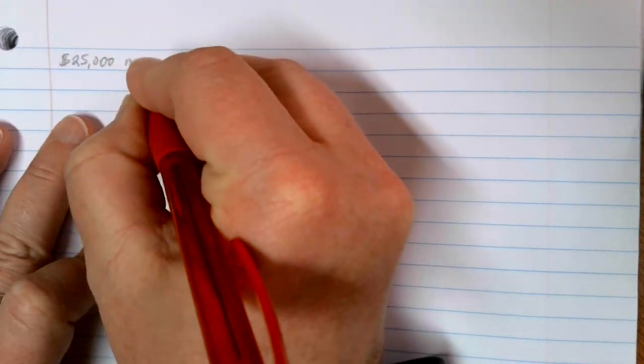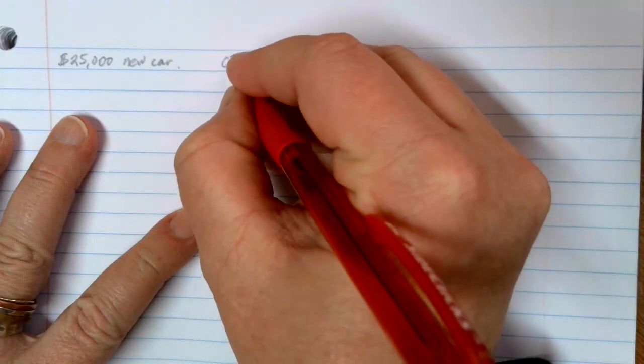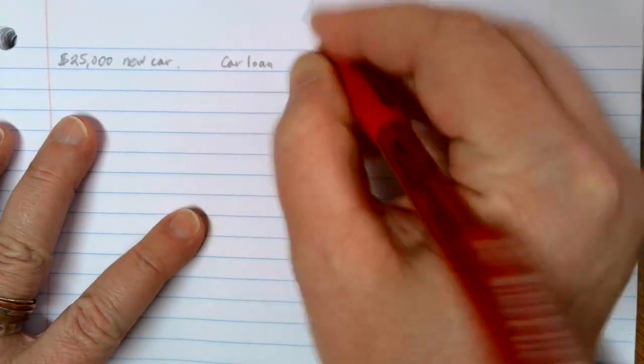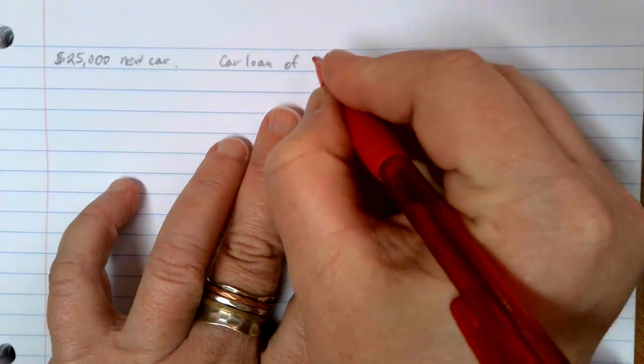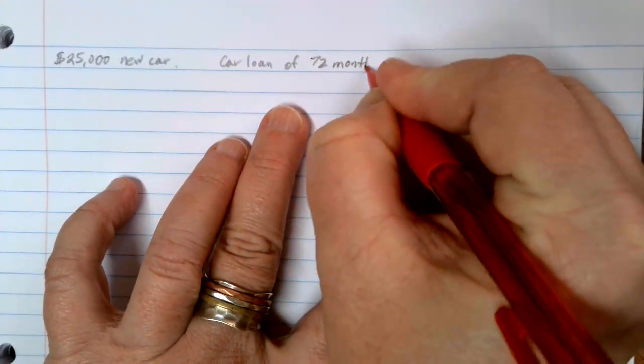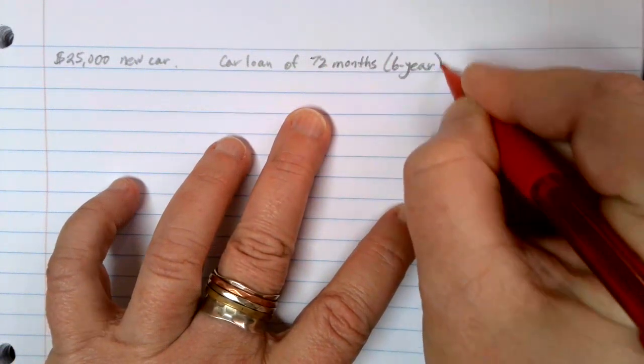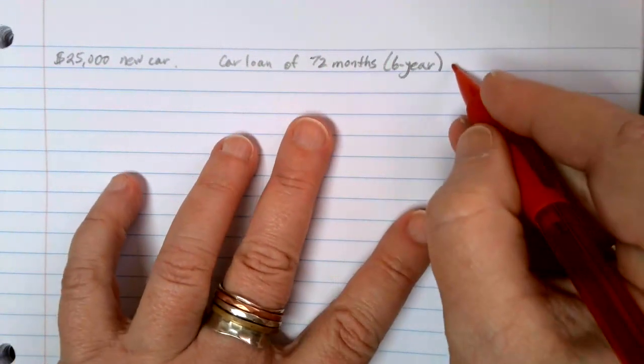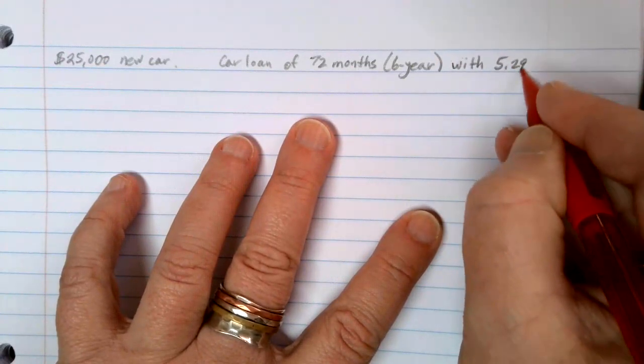Let's suppose that we want to buy a $25,000 new car. We qualify for a car loan of 72 months, so that's a six-year car loan with 5.29% financing.